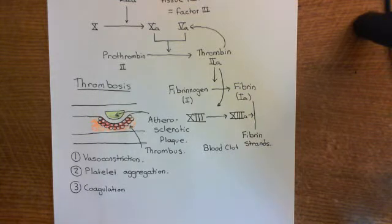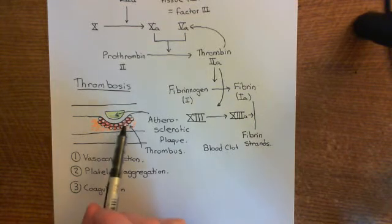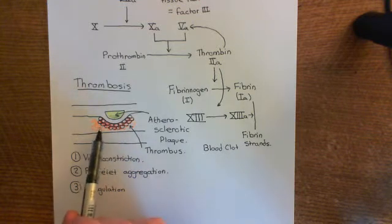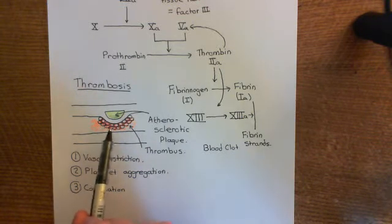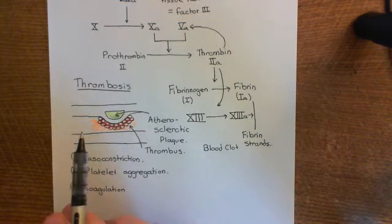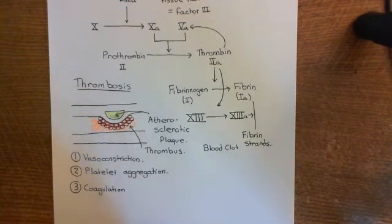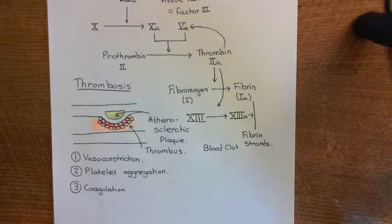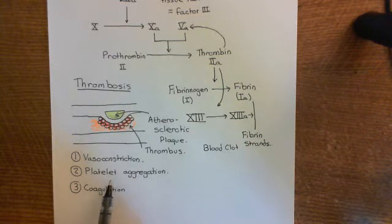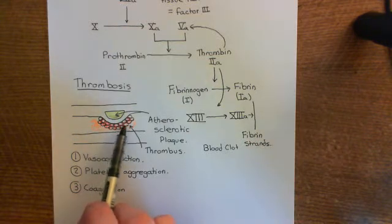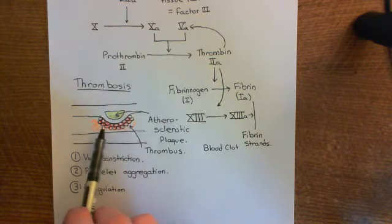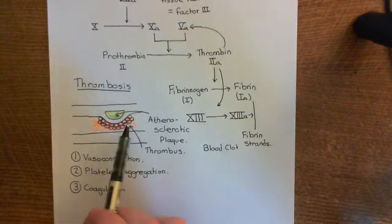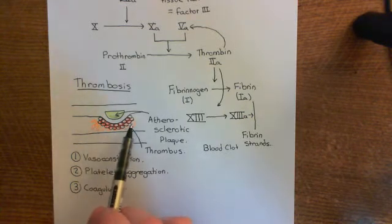What it leads to is platelets firstly adhering to the surface of the blood vessel, then you get platelet activation, which leads to the platelets releasing ADP and thromboxane A2. The ADP triggers a chain reaction which leads to thromboxane A2 going up and up. The thromboxane A2 causes vasoconstriction of the blood vessel locally. In addition, it leads to the platelets becoming sticky and they start sticking on top of the ones which originally adhered to the surface of the blood vessel, forming a platelet aggregate.